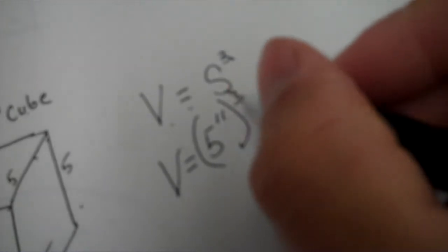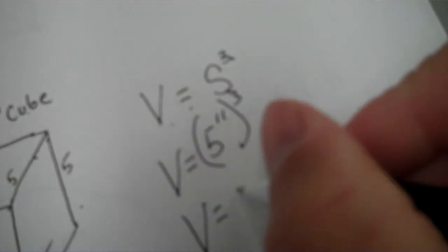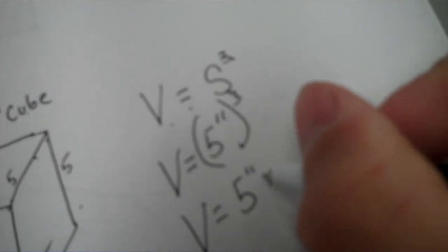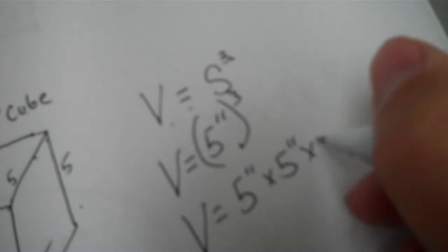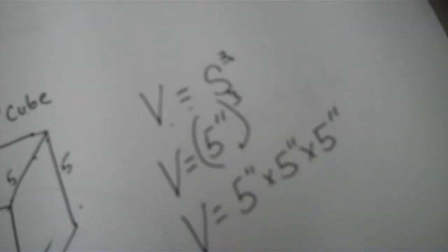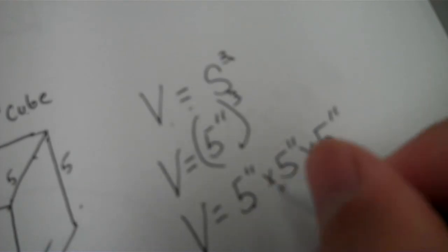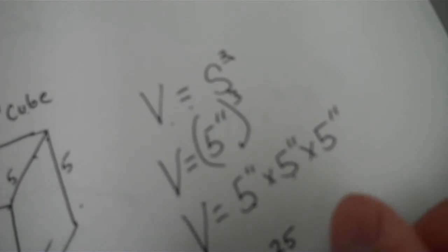You're gonna cube it. What you're doing is this cube on here, really what you're doing is you're taking five inches times five inches times five inches, very similar to what you did up here. So the volume of that would be five times five is 25, 25 times five would be 125.